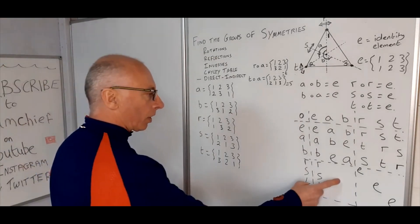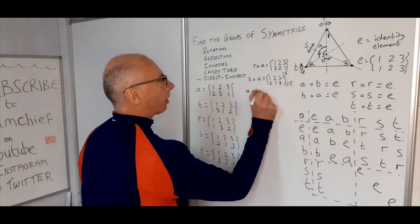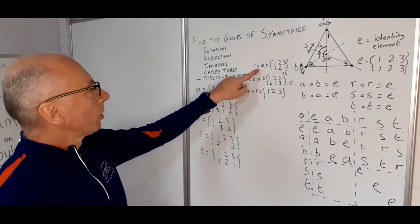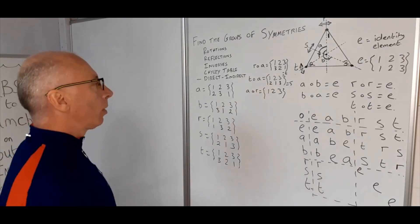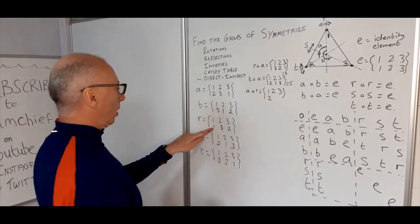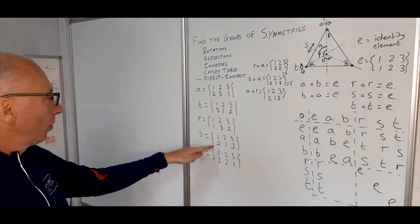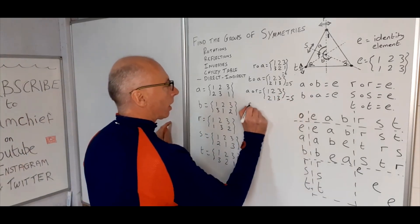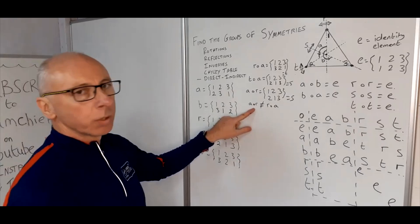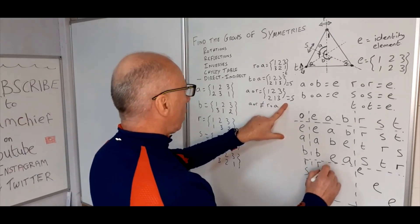Now let's look at R composite A — that is, A acting on R. Starting with one: R gives one, then A gives two. Two: R gives three, then A gives one. Three: R gives two, then A gives three — wait, the missing one is three, giving two, one, three, which is S. So A dot R does not equal R dot A — this group is not commutative in multiplication.